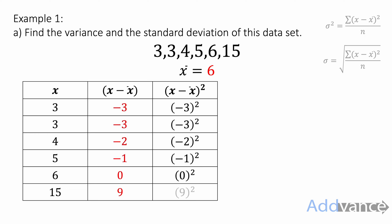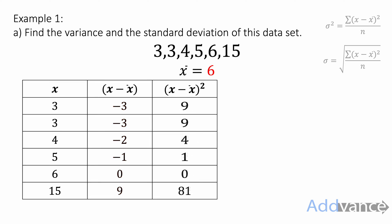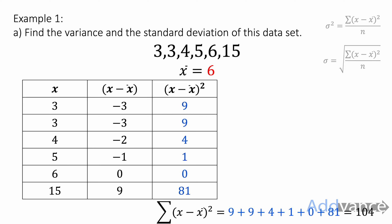Now we square all those values: minus 3 squared, minus 3 squared, minus 2 squared, minus 1 squared, 0 squared, 9 squared, and so on — and we get the squared column. Now we add all of them together: the sum of all (x minus the mean) squared is 9 + 9 + 4 + 1 + 0 + 81, which equals 104.